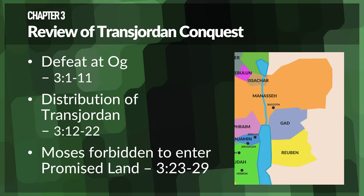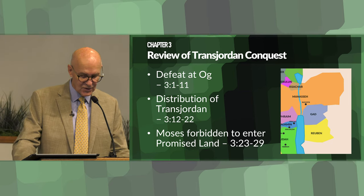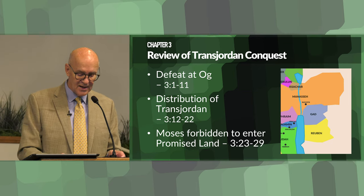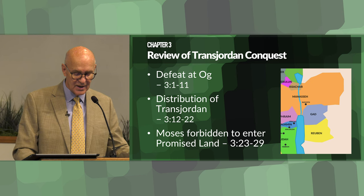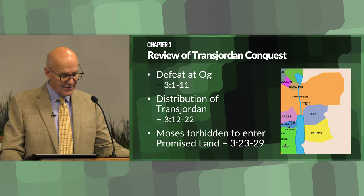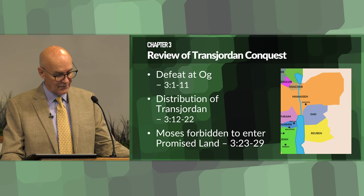Chapter three features a further review of the Transjordan conquests. First, the defeat of Og — Deuteronomy 3:1–11 — a detailed account of the conquest of Og king of Bashan and his territories. This acts as a reassurance of God's support and the divine gift of land, bolstering the morale of the Israelites.